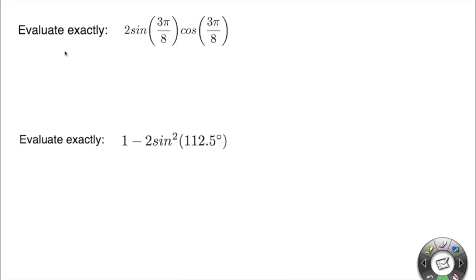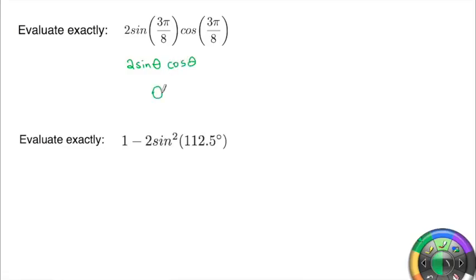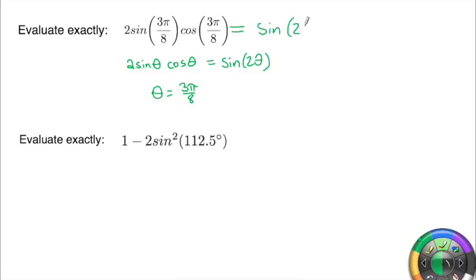Here's an example of how to use the double angle formulas given certain angles. We have to recognize what we're given. This looks like 2·sin(θ)·cos(θ), where θ is 3π/8. That formula is the double angle for sine, equal to sine of 2θ. So we replace the whole expression with sine of 2 times 3π/8, which gives us sine of 3π/4.